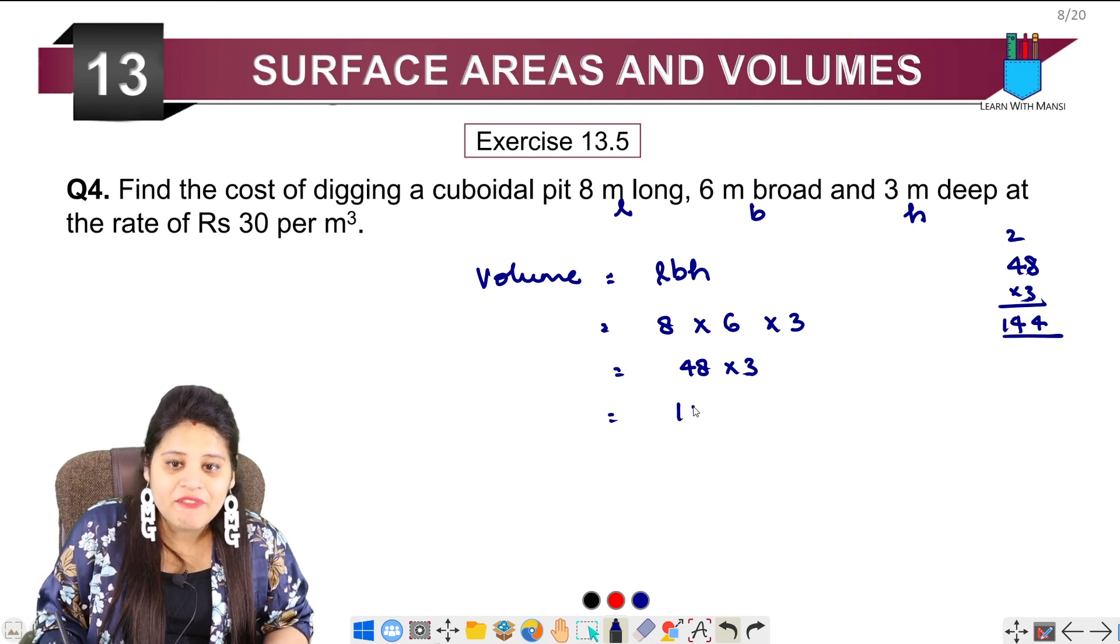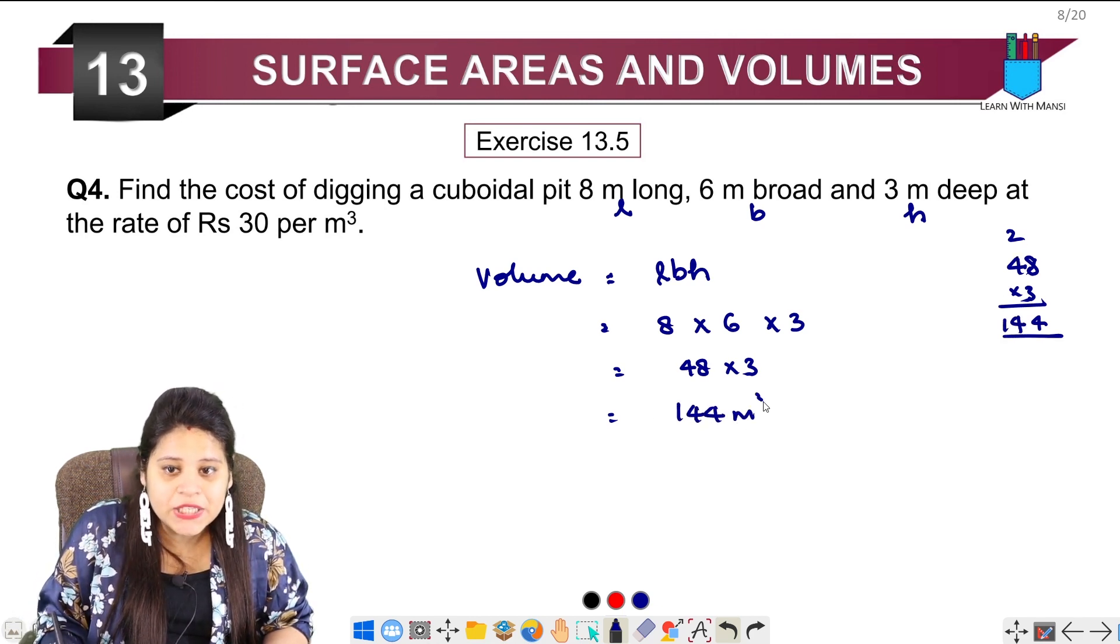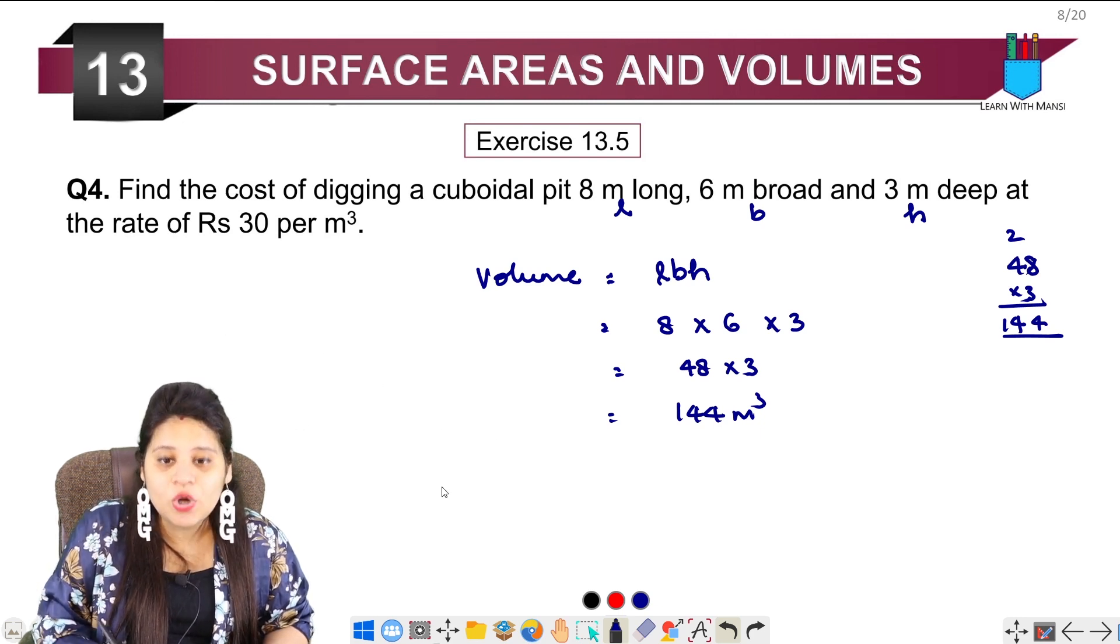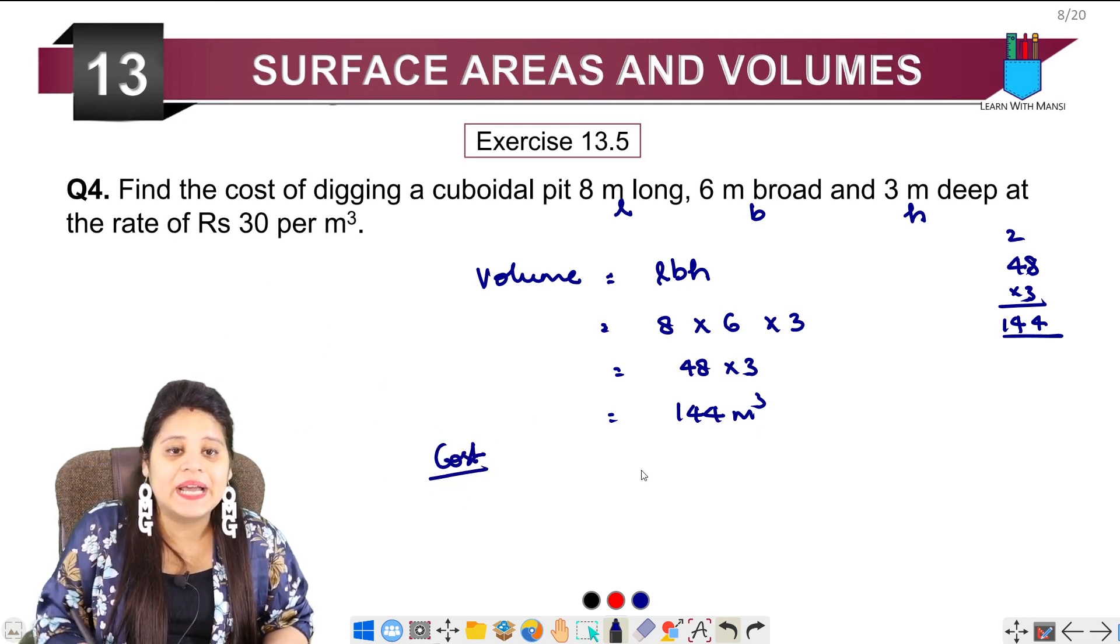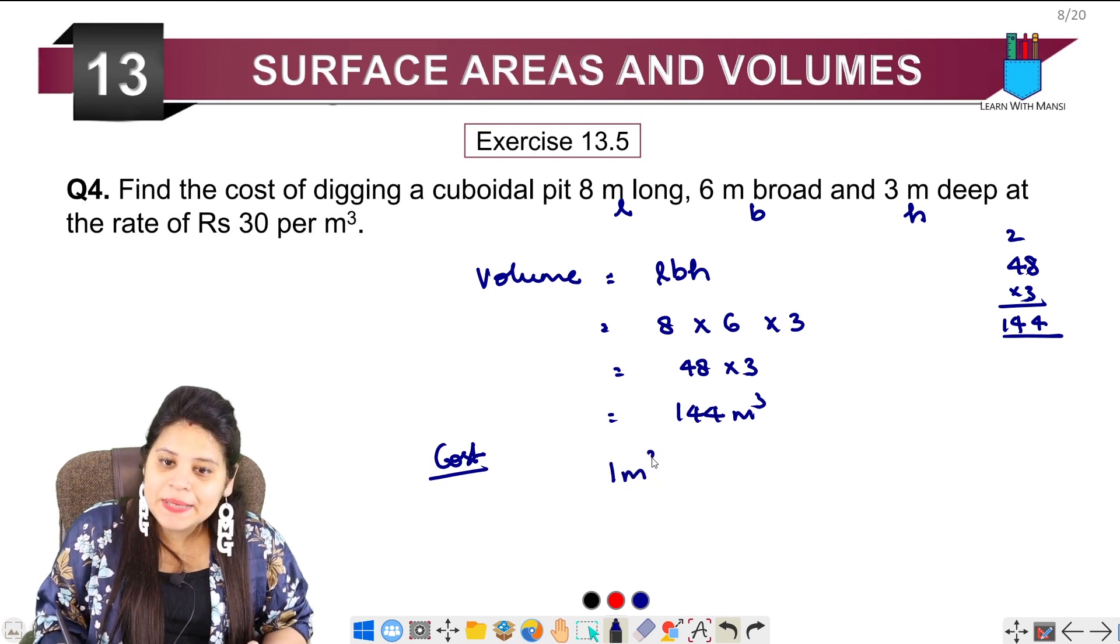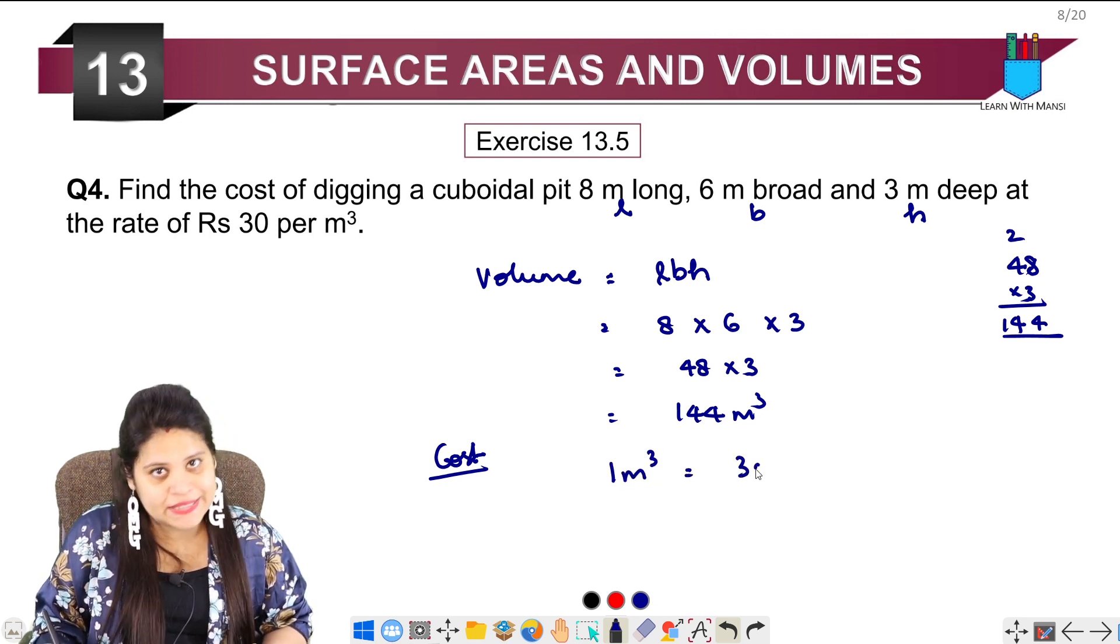So we have 144 meter cube. Now we have to calculate the cost. We are given that the cost of 1 meter cube is 30. We have to find the cost of 144 meter cube.